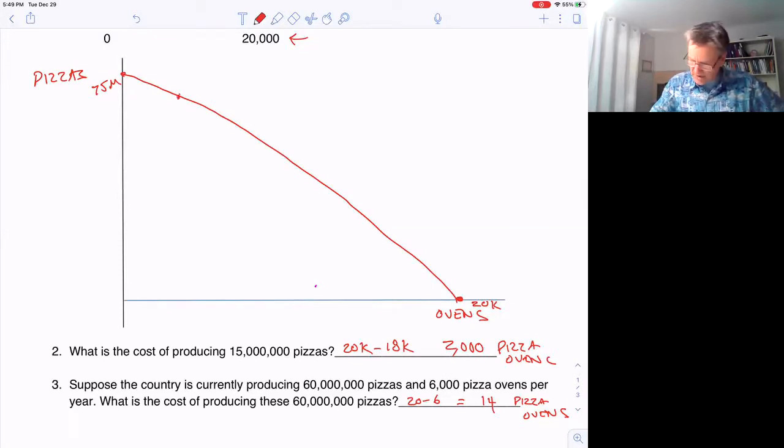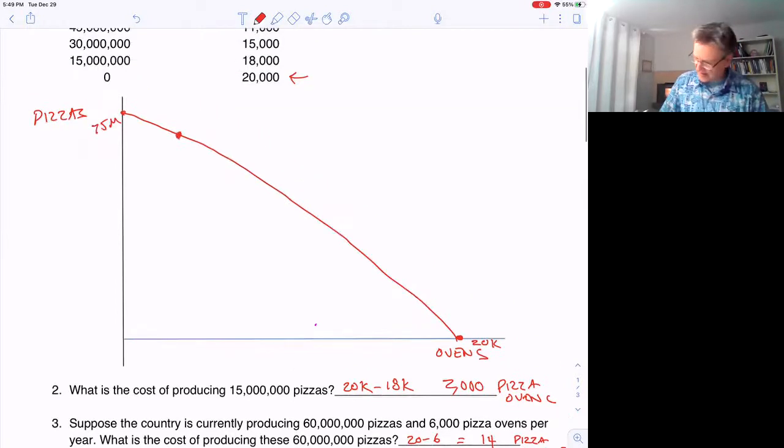So we're right up here somewhere on the PPF. And that, this is 2018 PPF. That means in 2019, the next year, we should be able to make more pizza ovens. So that'll push this PPF out in the next year.